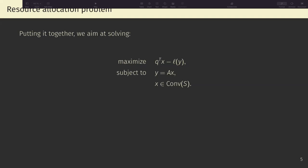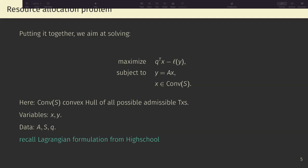Now putting these two components together, we can aim at solving the following problem. We want to maximize the user utility, the participant utility, Q transpose X, minus the network unhappiness, subject to that we're spending Y amount of resources, and that X belongs to the set of admissible transactions. This is more of a technical requirement, but it's necessary for the formulation. So, the variables in this problem are X and Y, and the data of the problem are A, which again is the matrix of the resources utilized by transaction j. S is the set of admissible transactions, and Q is the joint miner user utility.